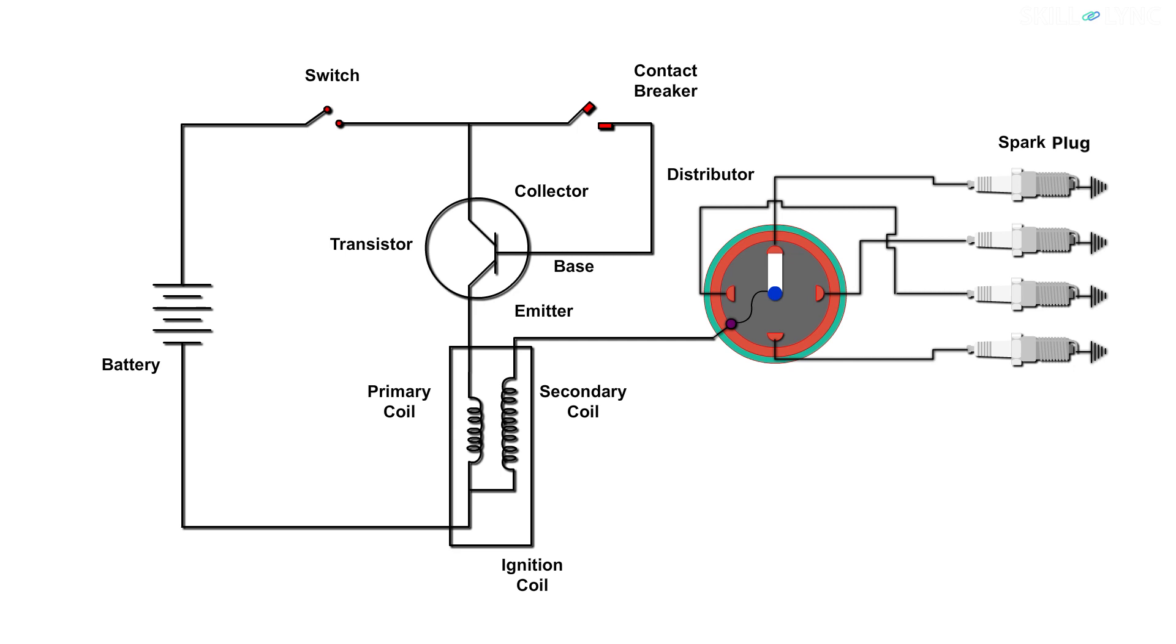The negative terminal of the battery is connected to one end of the primary coil and the positive terminal is connected to the ignition switch. The other end of the primary coil is connected with the emitter of the transistor, whereas the collector is connected with the ignition switch. The base of the transistor is connected to the contact breaker.